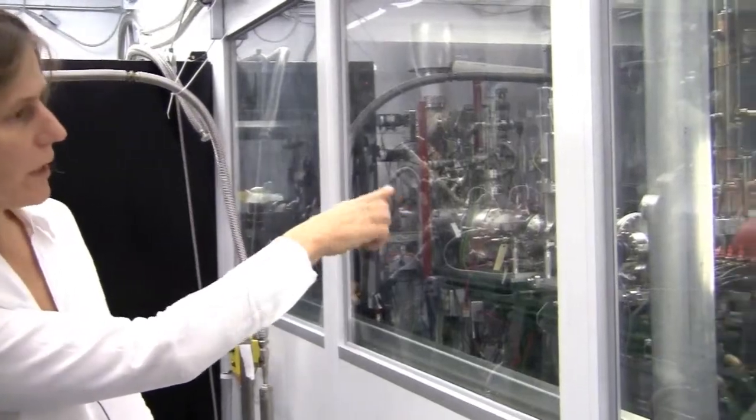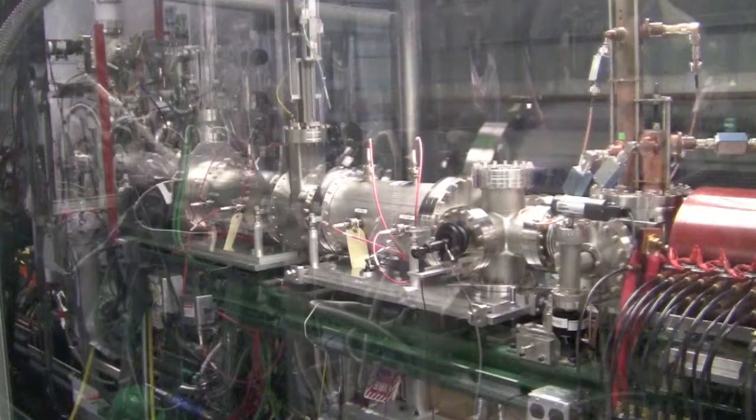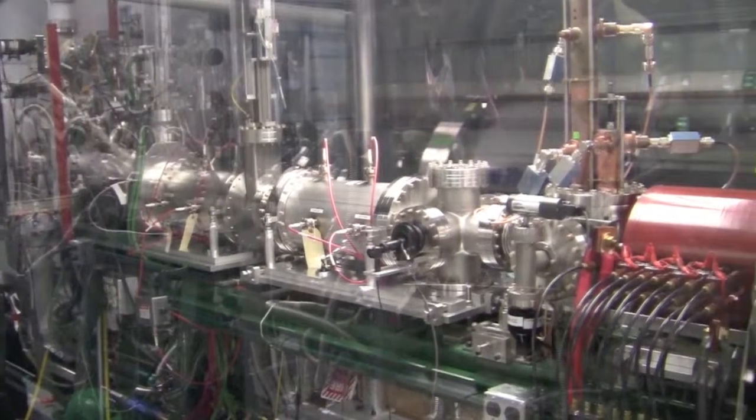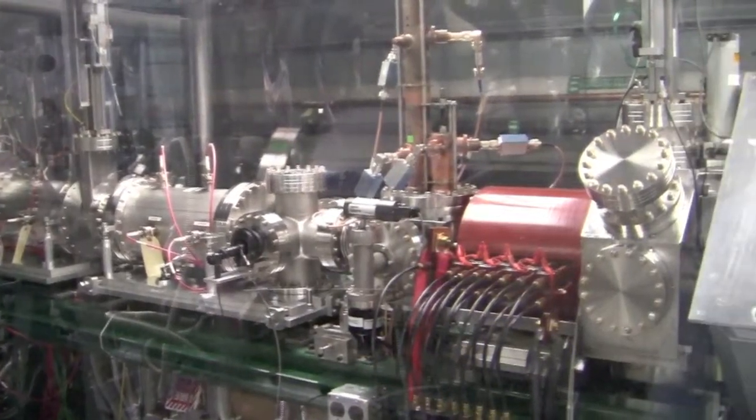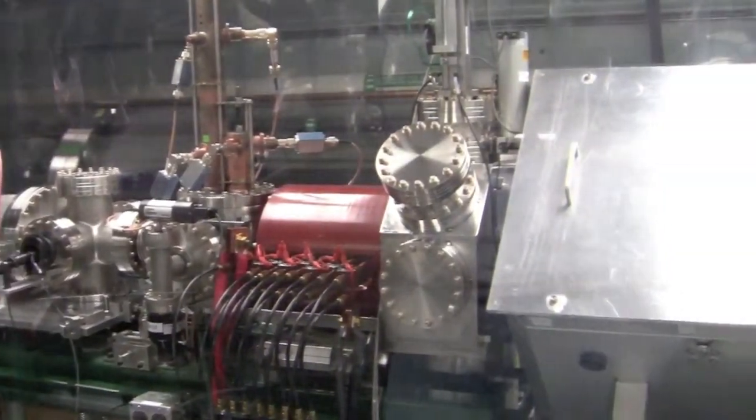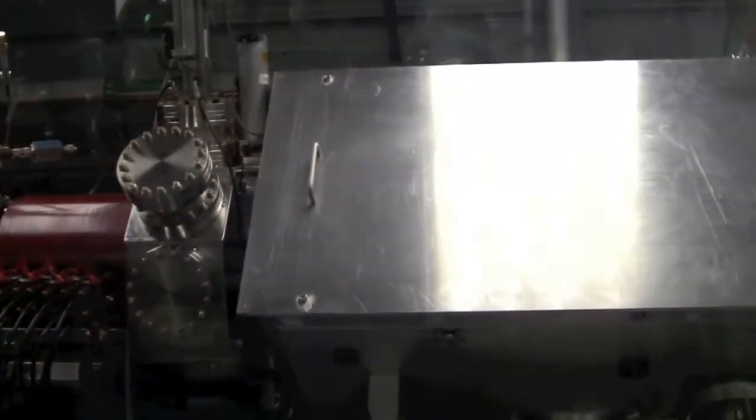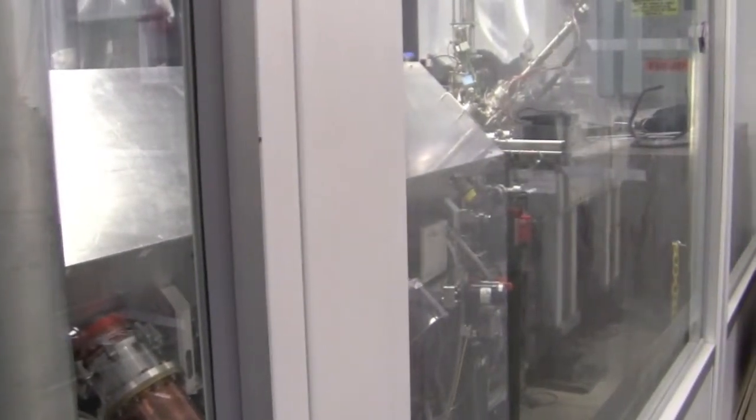And then go through this machinery and go to the first accelerator structure, which is called a radio frequency quadrupole. And in this section, the ions are actually bunched to small pieces and then accelerated to a speed of 6700 miles per second or 0.6 MeV per nucleon.